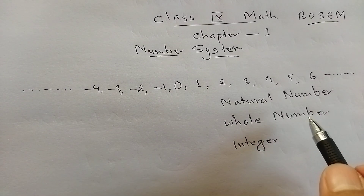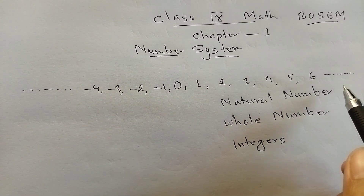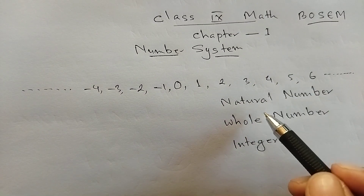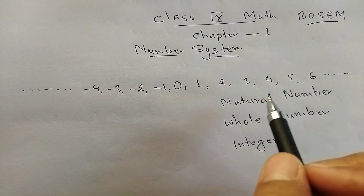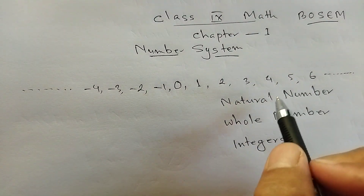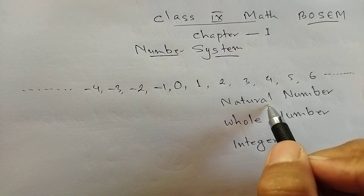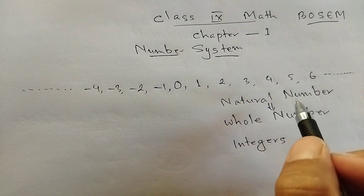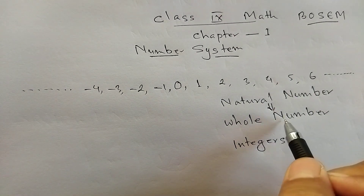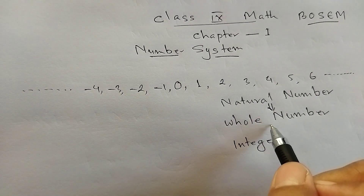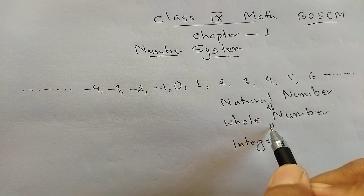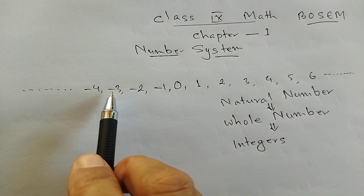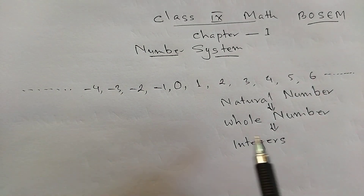This is the integer number. The integer number includes 0, minus 1, minus 2, minus 3 — these are the integer numbers.